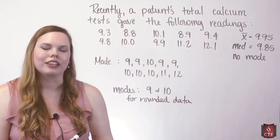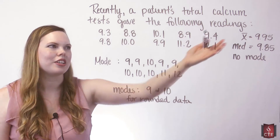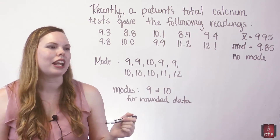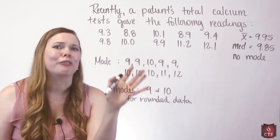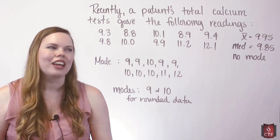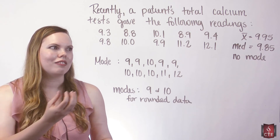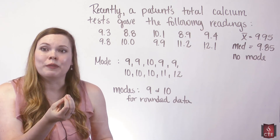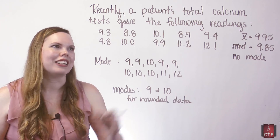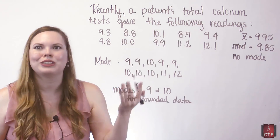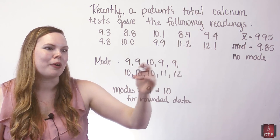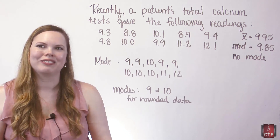There are our measures of central tendency: a mean of 9.95, a median of 9.85, and modes of 9 and 10 for the rounded data. They all line up — they're all very similar. It doesn't always happen, but this is a nice data set. A calcium test should have a nice clear mean, median, and mode that are similar.